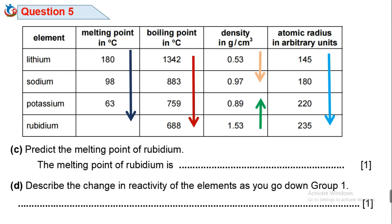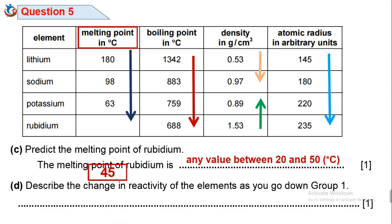Question 5c: Predict the melting point of rubidium. Check the melting point column — we've established that melting point is decreasing, so the melting point of rubidium is any value between 20 and 50 degrees Celsius, i.e., a number below 63 degrees Celsius. For this video, 45 degrees Celsius is chosen.